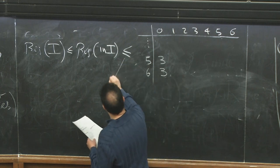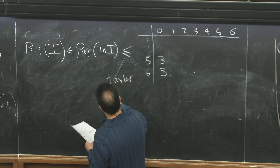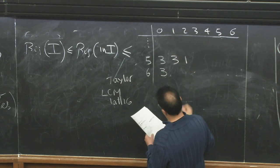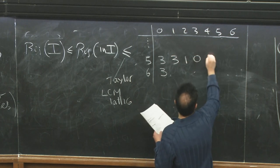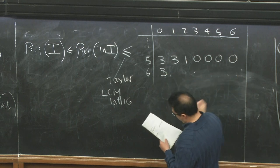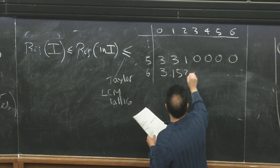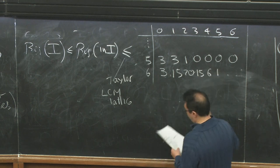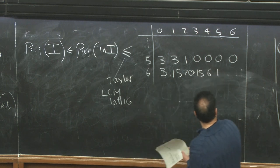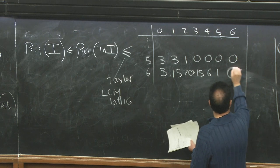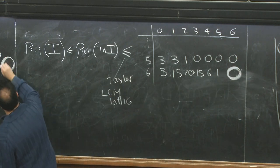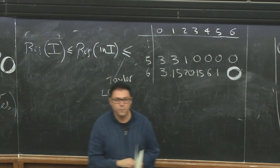From Taylor or the LCM lattice you can get this number under control. Let's say three, one, after that zero, zero, zero, zero; in this trend three, 15, 20, 15, 6, 1, and finally I get a zero here and that's the position I care for. So the bound here was zero.